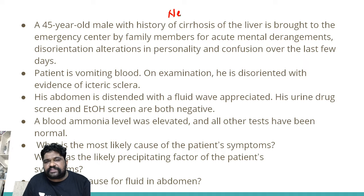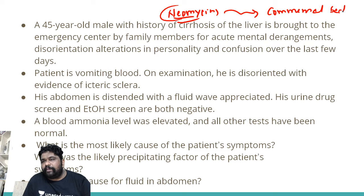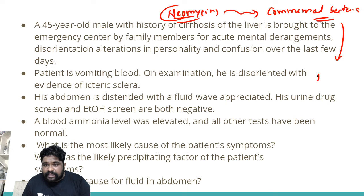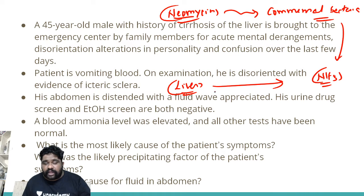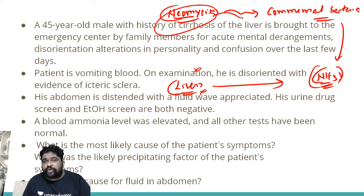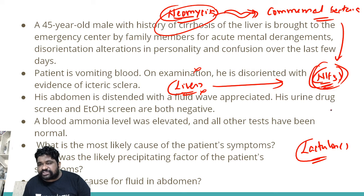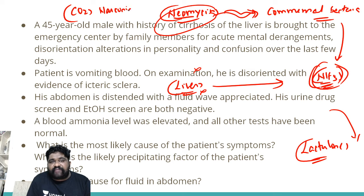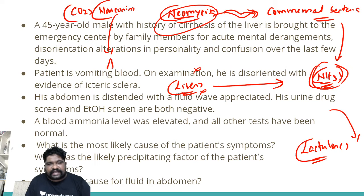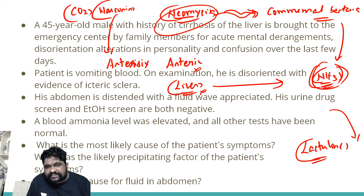Why is neomycin given in liver failure? Because neomycin inhibits commensal bacteria, which continuously metabolize proteins and release ammonia. When the liver is failing, even normal physiological ammonia production becomes dangerous. Lactulose can also be given to flush out bacteria from the GIT, further reducing ammonia production. Also remember, carbon dioxide narcosis can be exhibited as a flapping tremor called asterixis.